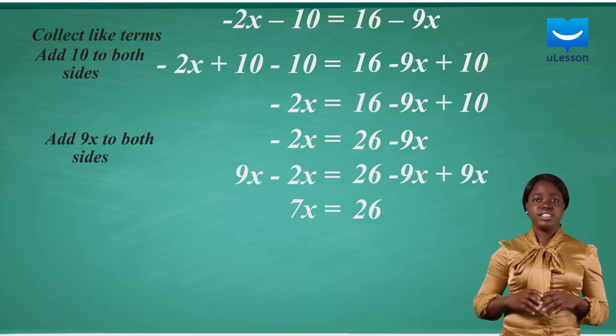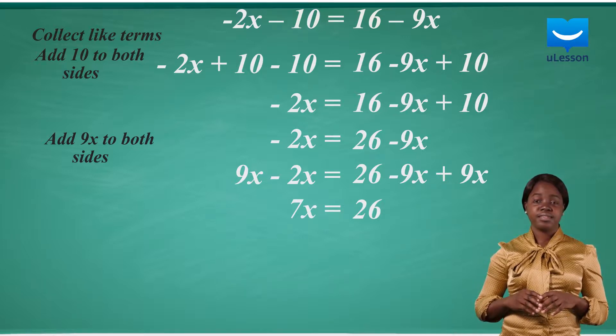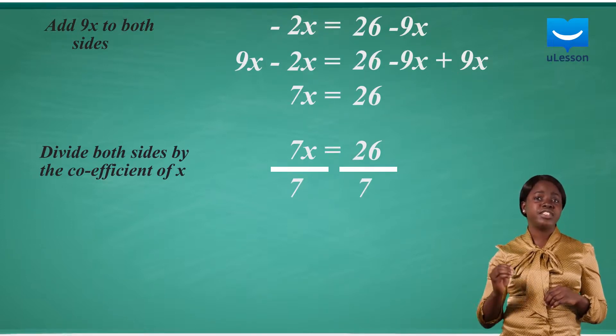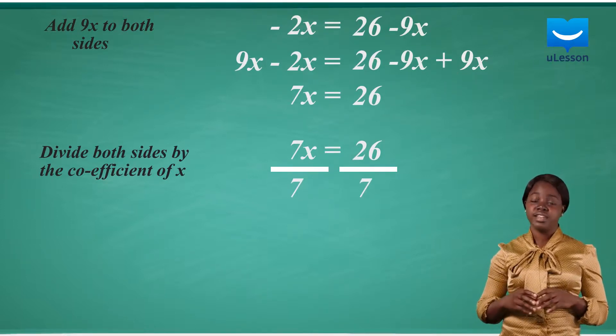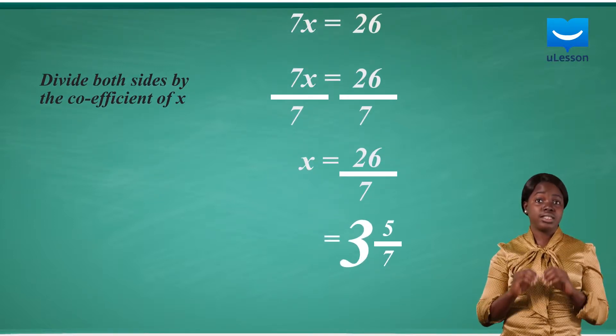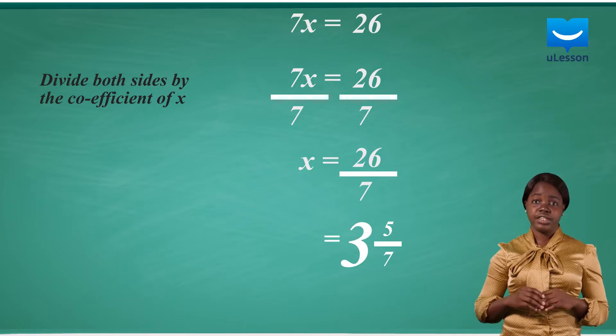What do we do at this point? We divide both sides by the coefficient of x, which is 7. Therefore, x equals 26 over 7, which is the same as 3 and 5 over 7.